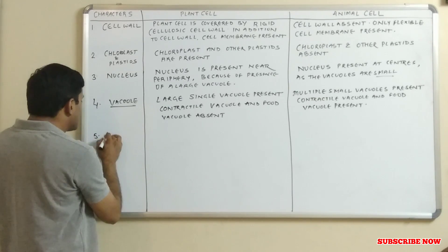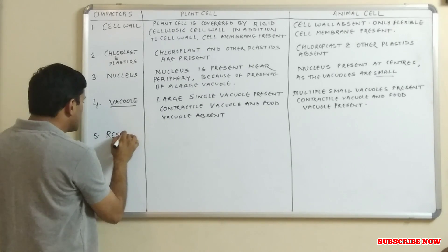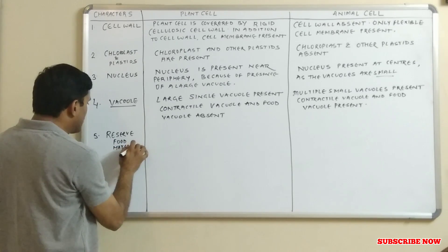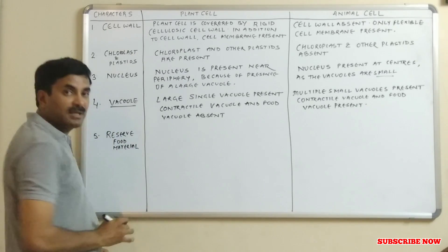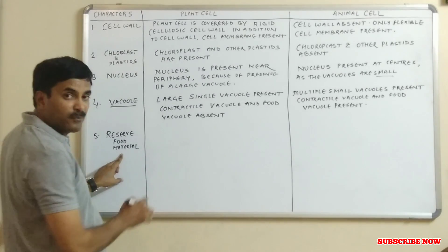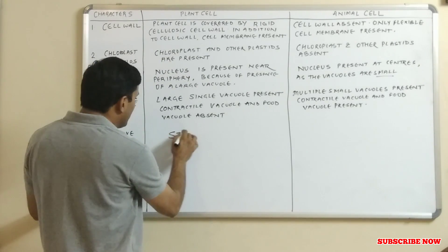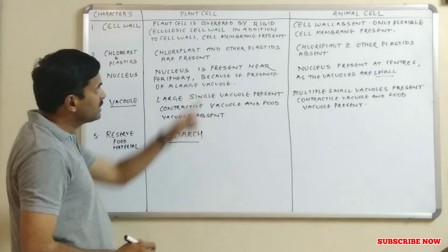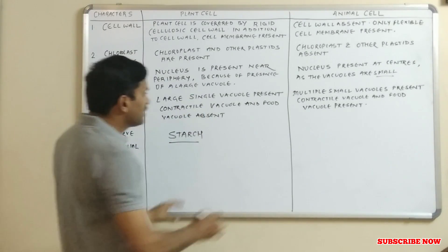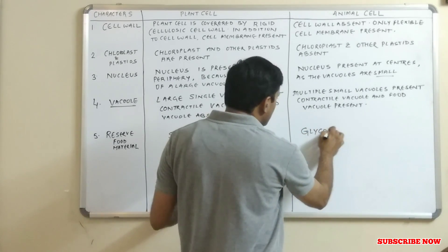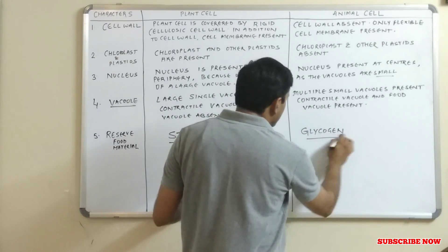The next point is reserve food material. In the case of the plant cell, the reserve food material is starch. In the case of the animal cell, the reserve food material is glycogen.